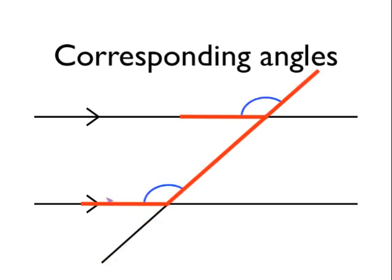Sometimes the F shape might actually be upside down. If you can spot that, then again, the angles inside the F shape are another pair of corresponding angles. Or it can even be an F shape that's upside down and backwards. So again, these angles, this pair of angles are what we call corresponding angles.